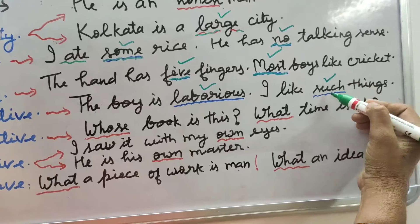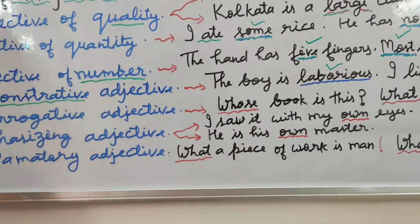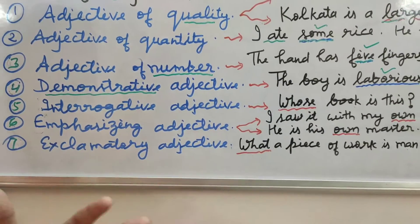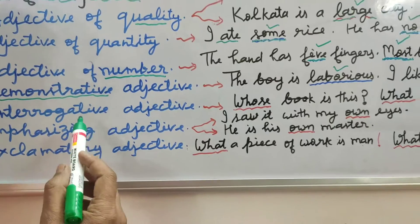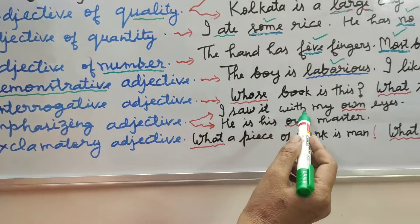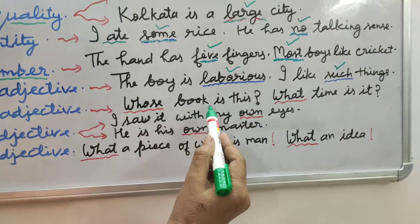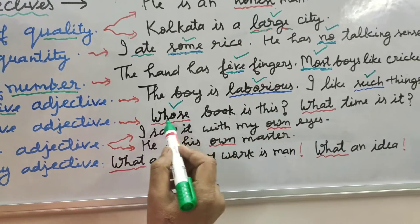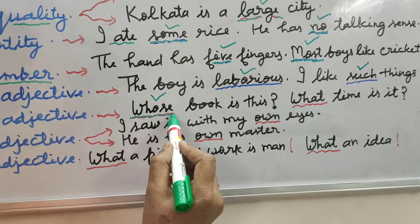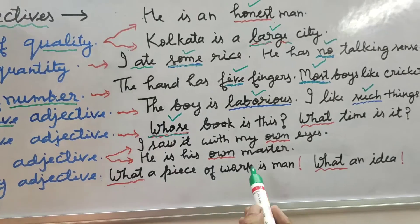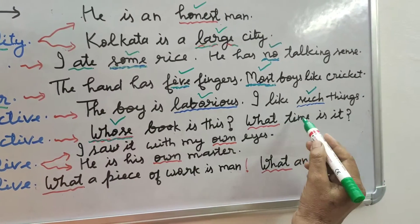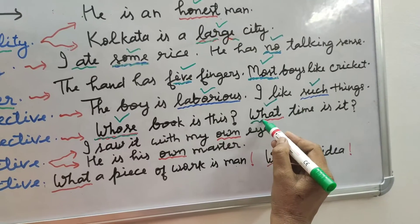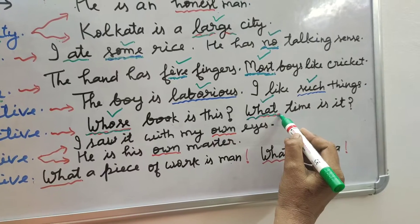Number five: interrogative adjective. It means if you are asking or interrogating something, then this type of adjective is used with the noun. 'Whose book is this?' Someone is asking about the book — the word 'whose' is the interrogative adjective. 'What time is it?' Someone is asking about the time, so the word 'what' is the interrogative adjective.